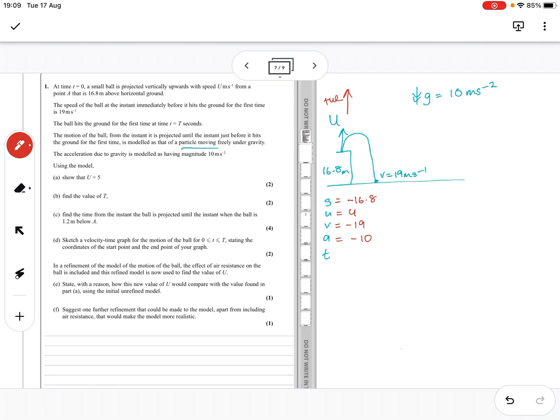So I'm going to do v squared equals u squared plus 2AS. So v squared is minus 19 all squared. So I've got minus 19 squared is 361. So minus 2 times 10 times 16.8 is minus 336 equals u squared, which gives me 25 equals u squared, u equals 5.